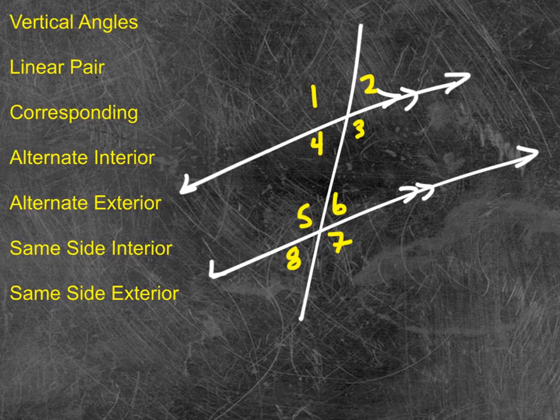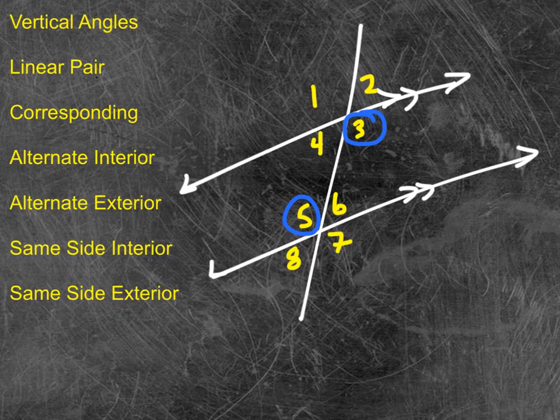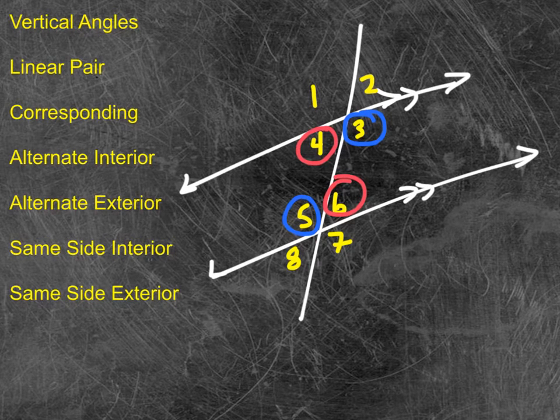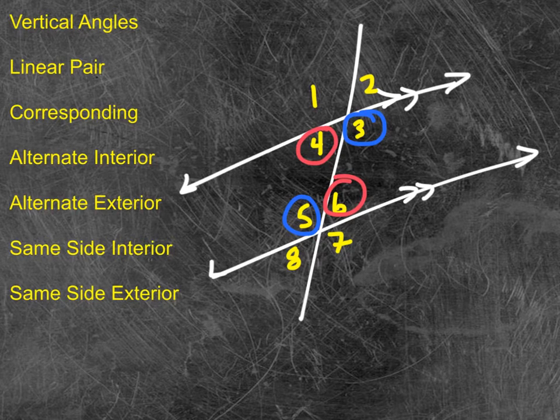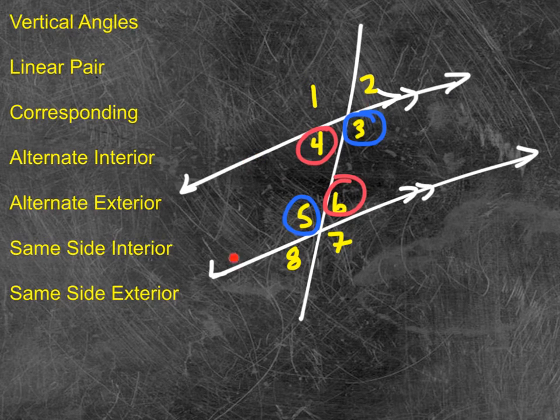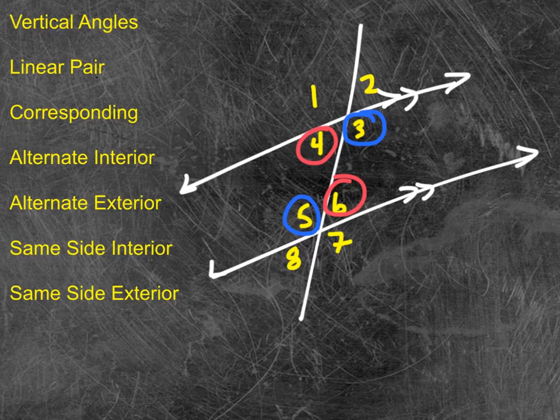Alternate interior. Alternate means they're on alternating sides, and they are equal to each other. Alternate and in the interior. Now the interior refers to the interior of the parallel lines. This is the interior between the parallel lines.